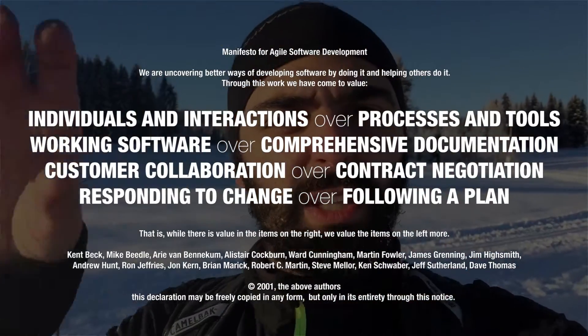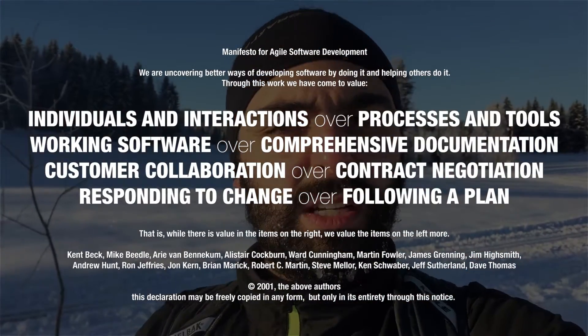The Agile Manifesto argues four points. Essentially, they're saying that while they value the things on the right, you should prefer the things on the left. It's important to remember that they're not saying the things on the right are valueless or useless, but rather that the things on the left generally should be preferred. I want to make four videos where I talk about each of these points separately.